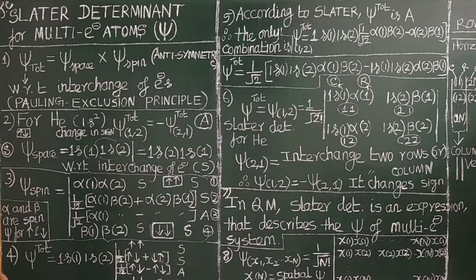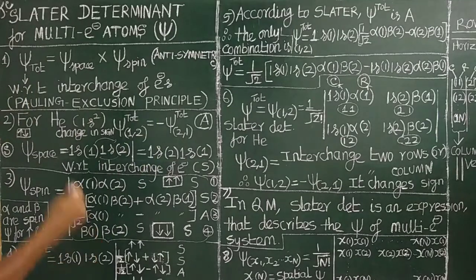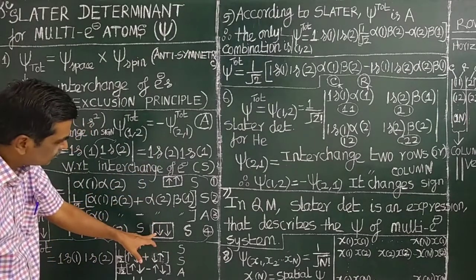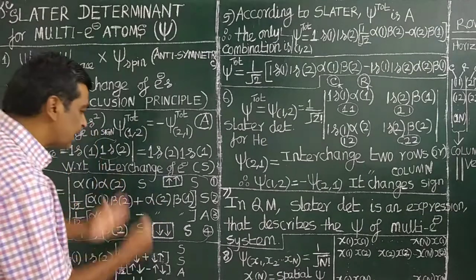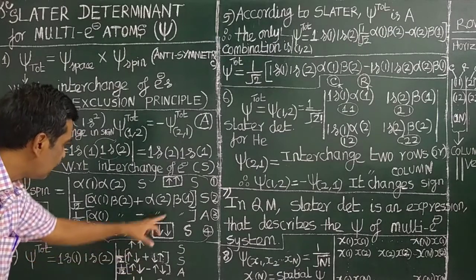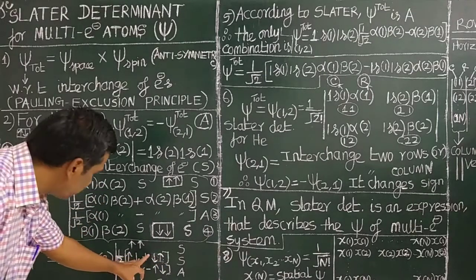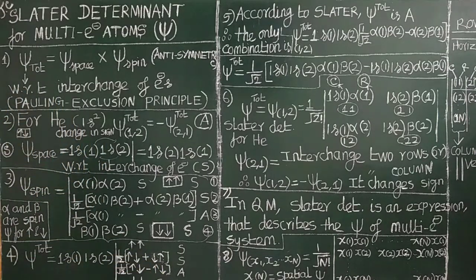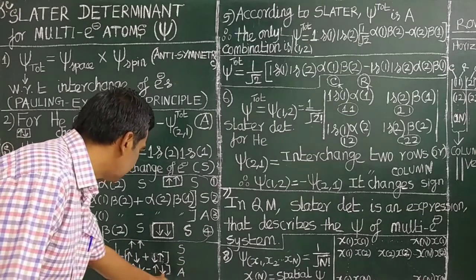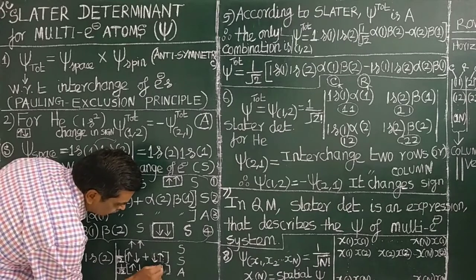Now let us write the spin wave function. The spin wave function can be represented in four different ways. Two electrons with the same upward spin — that is symmetric. Another possibility: two electrons with the same downward spin — also symmetric. There is another possibility: one electron spin up and another spin down. Out of the four combinations, three are symmetric and only one is anti-symmetric.